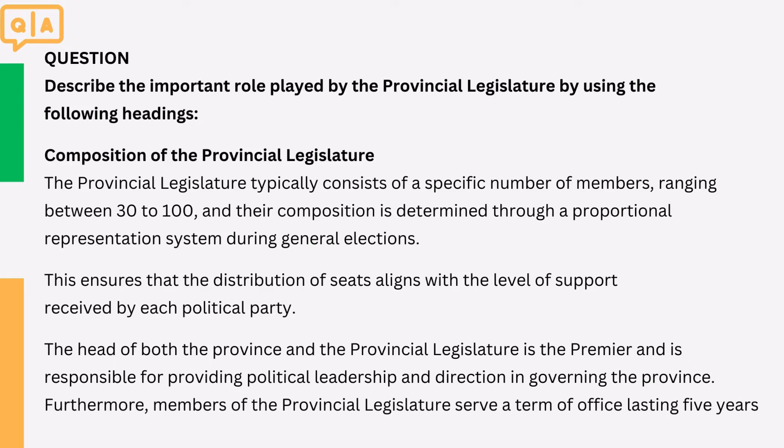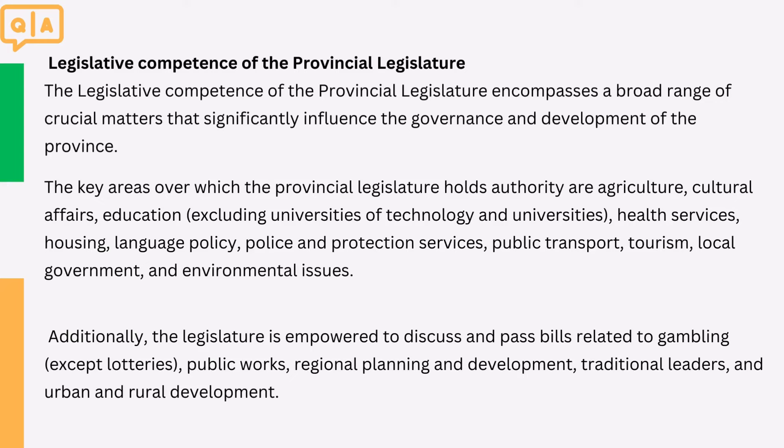2. Legislative competence of the provincial legislature. The legislative competence of the provincial legislature encompasses a broad range of crucial matters that significantly influence the governance and development of the province. The key areas over which the provincial legislature holds authority are agriculture, cultural affairs, education (excluding universities of technology and universities), health services, housing, language policy, police and protection services, public transport, tourism, local government, and environmental issues. Additionally, the legislature is empowered to discuss and pass bills related to gambling (except lotteries), public works, regional planning and development, traditional leaders, and urban and rural development.